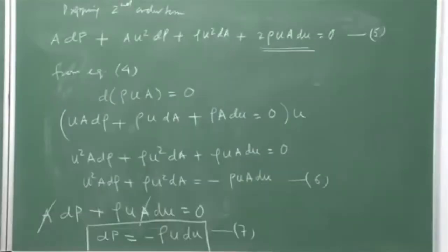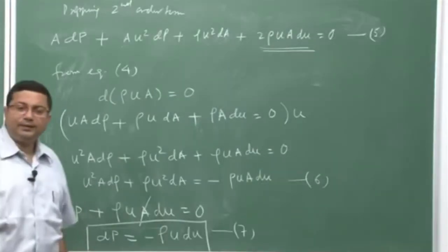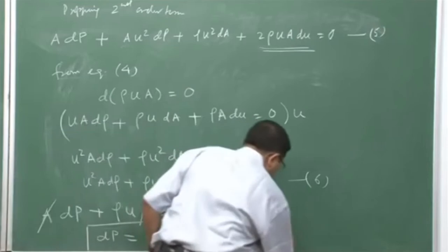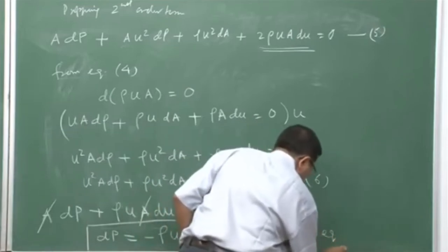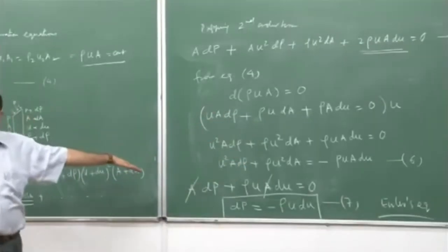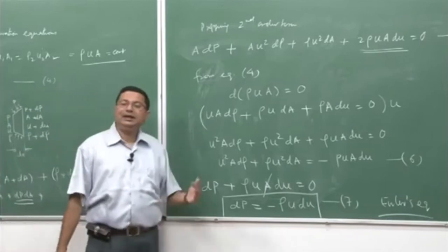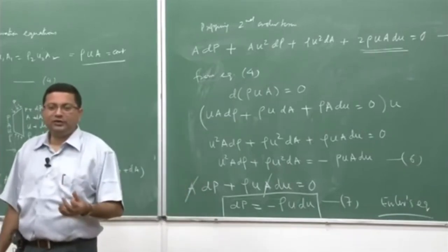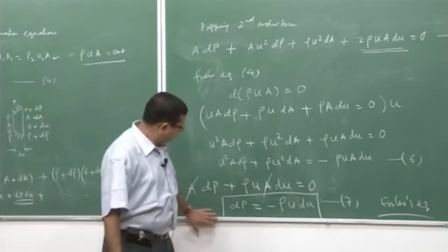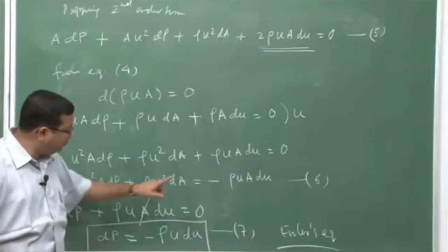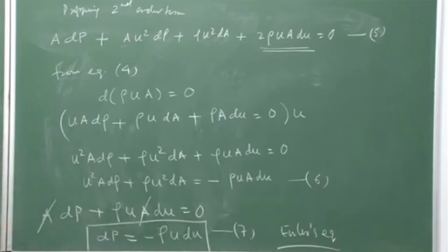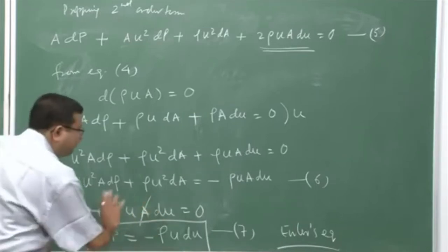This is a very important equation in fluid mechanics, called Euler's equation. It is valid under the assumptions that the flow is steady, inviscid, adiabatic, with no body forces, negligible potential energy, and quasi 1-D. With these assumptions, we have derived this fundamental fluid mechanics result.